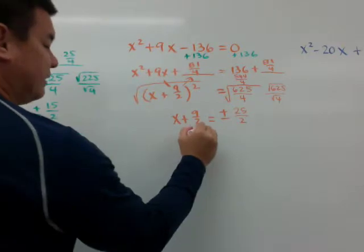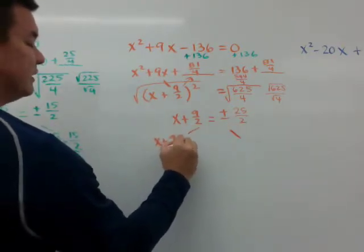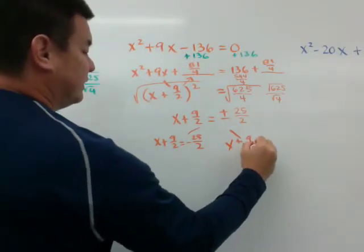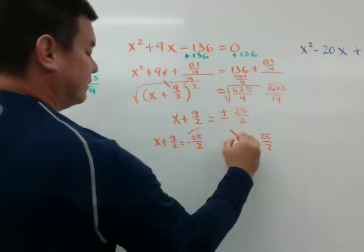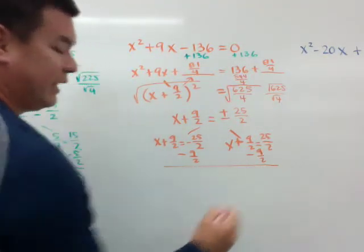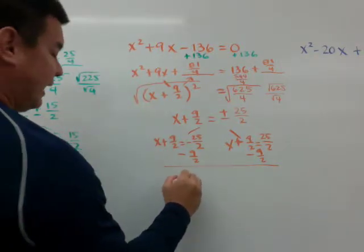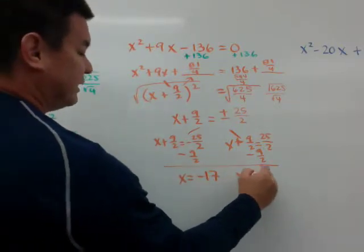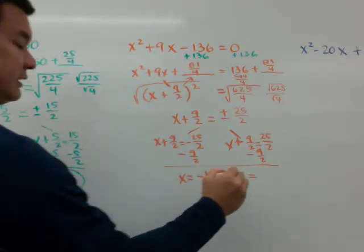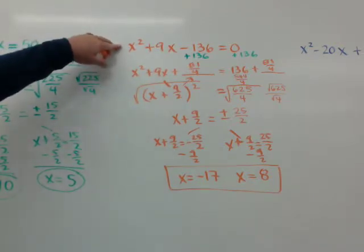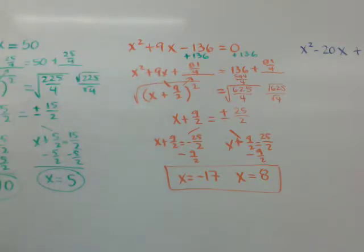Splitting into positive and negative: x plus 9 over 2 equals negative 25 over 2, and x plus 9 over 2 equals positive 25 over 2. Subtracting 9 over 2 from both: x equals negative 34 over 2, which is negative 17, and x equals 16 over 2, which is 8. So x equals negative 17 or 8. You could have actually factored the original problem as x plus 17 times x minus 8, but that's how you solve it by completing the square.